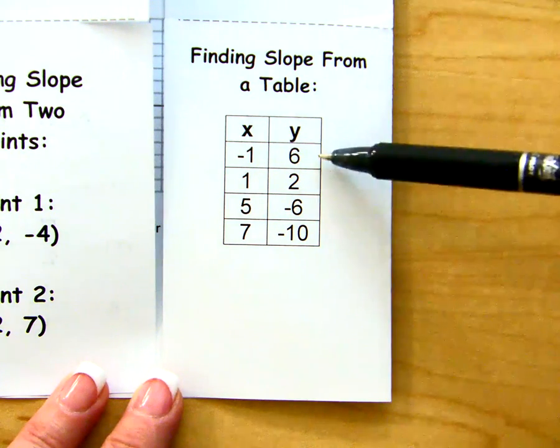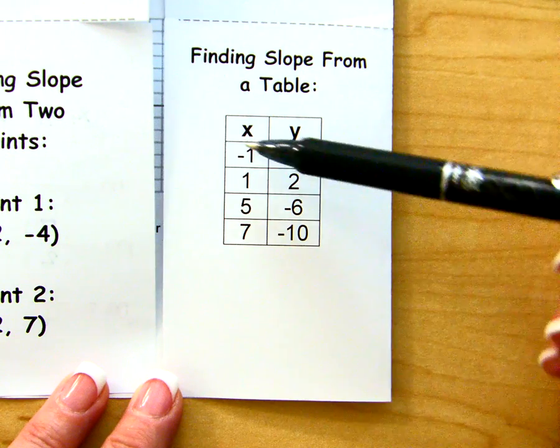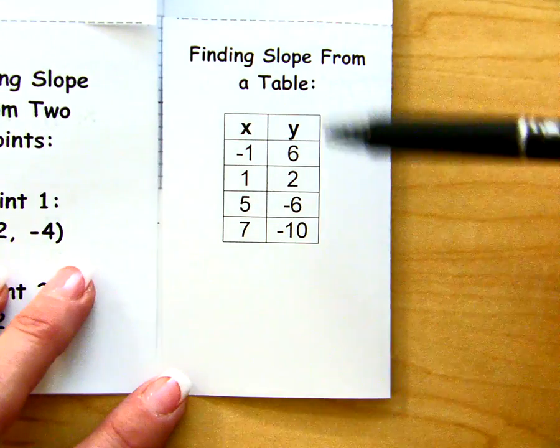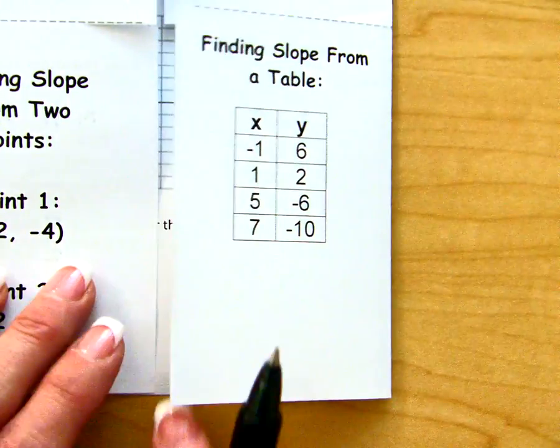So we're going to look at how our y values change in response and how the x values change. So we have change in y over change in x.